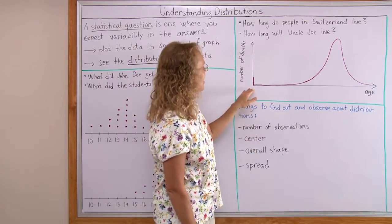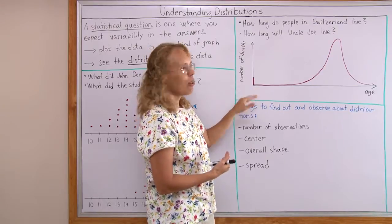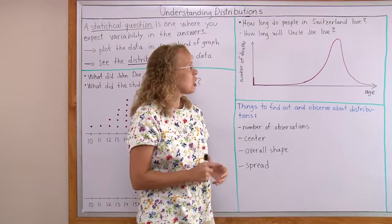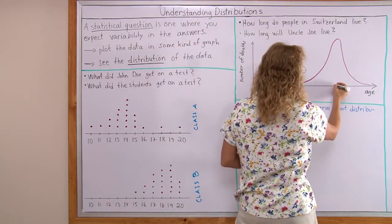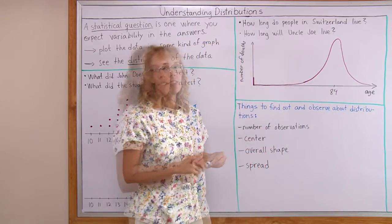This is a distribution. This is a graph of the distribution of how long people in Switzerland live. I actually checked the statistics online and this peak of the distribution happens at 84 years. So people in Switzerland live long lives.